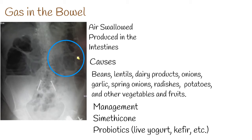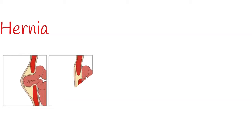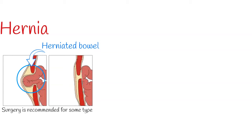Probiotics such as live yogurt and kefir are reputed to reduce flatulence when used to restore balance to the normal intestinal flora. Hernia happens when a bowel pushes through a weak spot in the abdominal wall. Treatment depends on severity. Surgery is recommended for some types of hernias to prevent complications such as obstruction of the bowel or strangulation of the tissue.